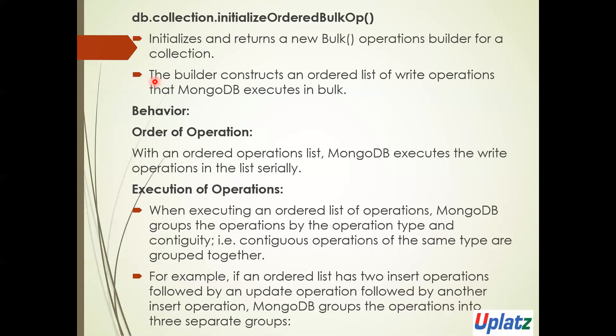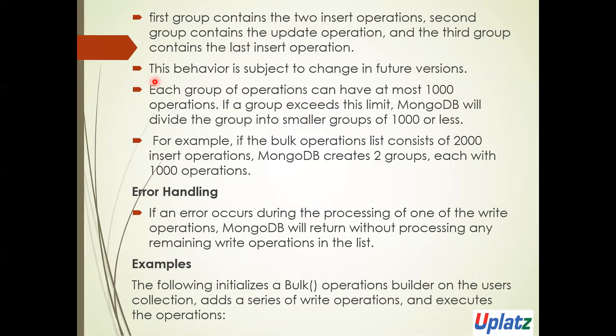While executing an ordered list of operations, MongoDB groups operations by operation type. For example, if you have two insert operations followed by an update and then another insert, it will group them into three different groups: first the two inserts, then the update, then the last insert. Each group has at most 1000 operations. If a group exceeds this limit, MongoDB divides it into smaller groups of 1000 or less.